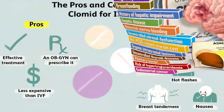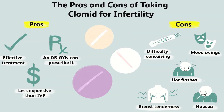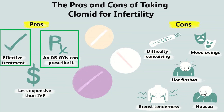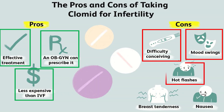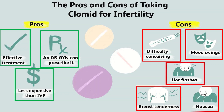What are the advantages and disadvantages of taking clomiphene citrate? The advantages include: it is effective, it can be easily prescribed by an obstetrician or gynae doctor, and it is less expensive than IVF treatment. The disadvantages include: it is not effective in all cases, and patients may complain of mood swings, hot flashes, breast tenderness, or nausea. In extreme situations, when an excessive dose is prescribed, the patient may develop ovarian hyperstimulation syndrome.